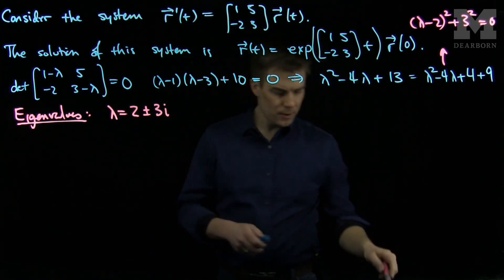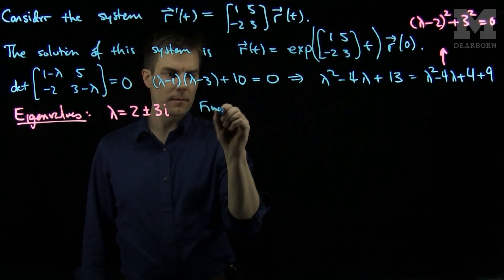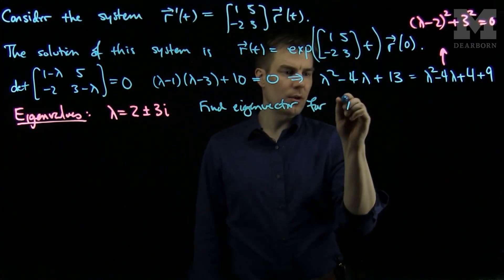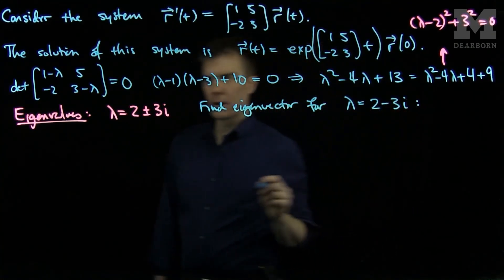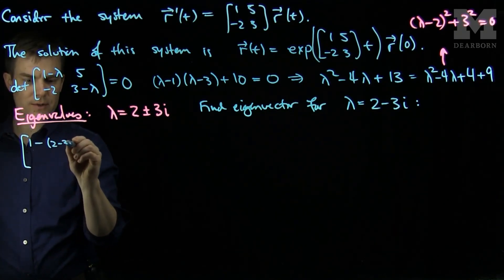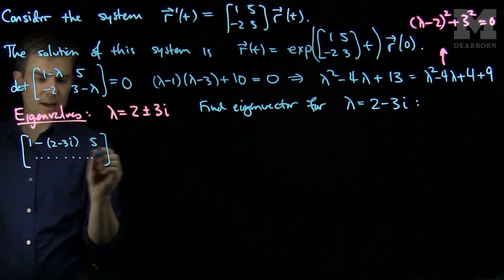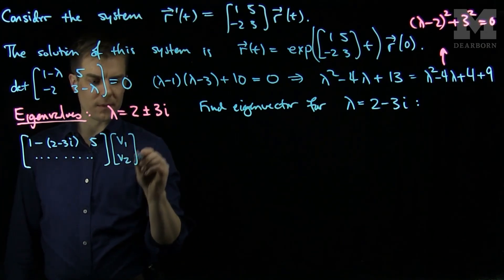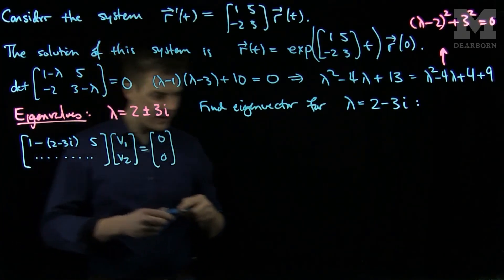How will we find this? We will look at [[1-2+3i, 5],...]. For two-dimensional matrices, the second row of the matrix for finding the eigenvector will be immaterial. We will have v₁ and v₂, and set this equal to [0, 0].